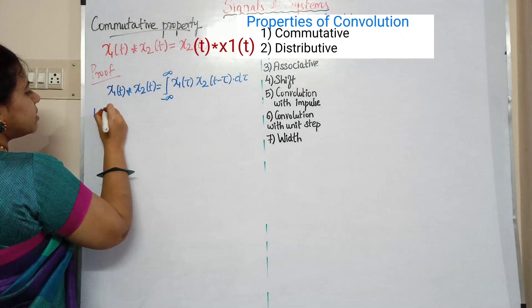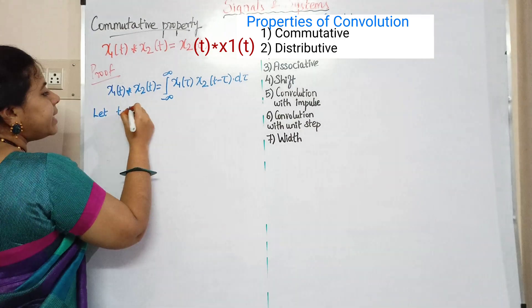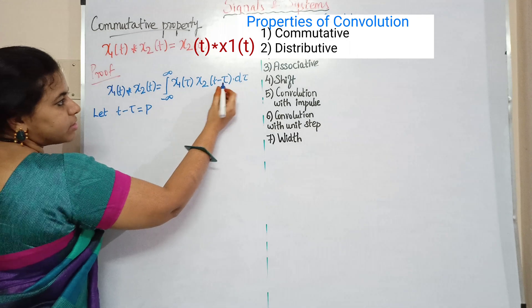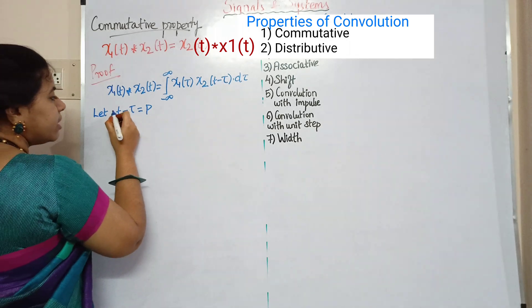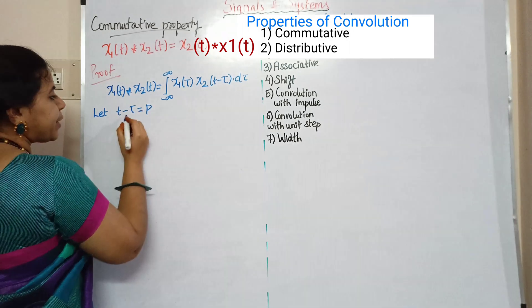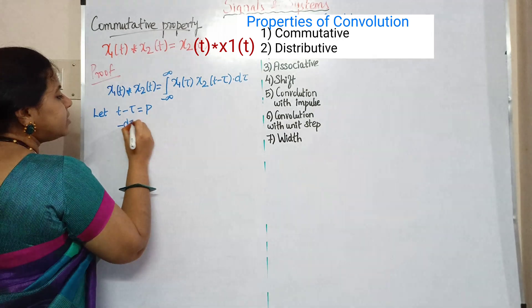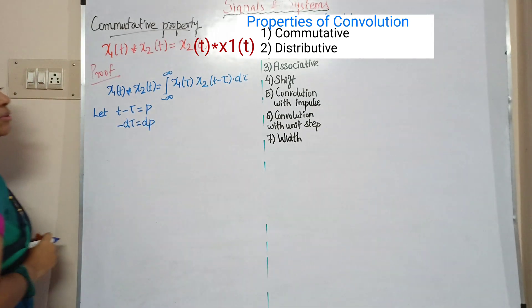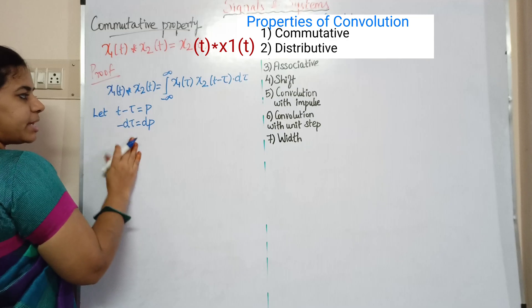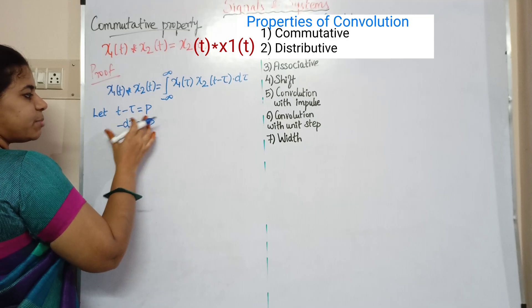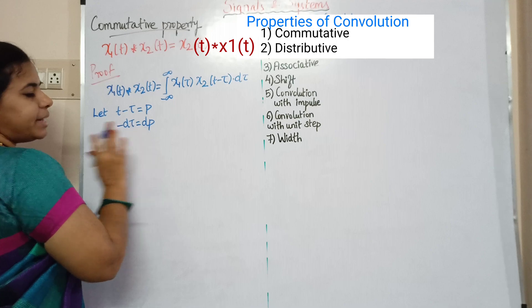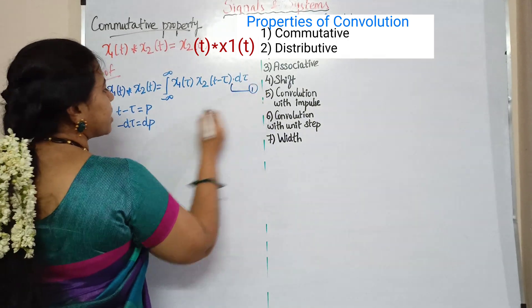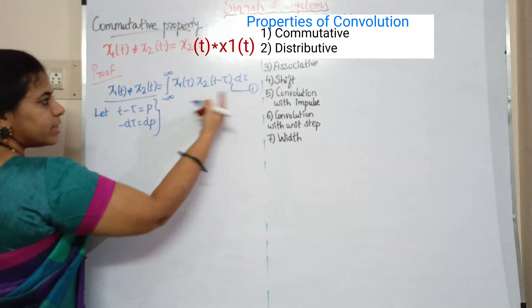So, in this case, let's consider p. Let t minus tau equal to p. Now, what do we differentiate here? Minus d tau equals dp. That's because t is constant, so we differentiate. Minus d tau equals dp. Now, let's take this first equation and substitute.